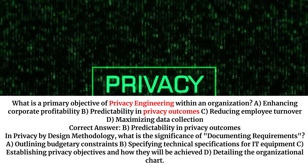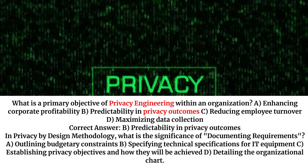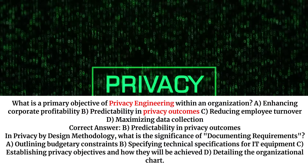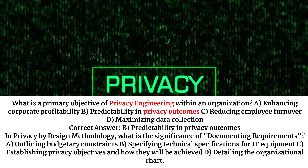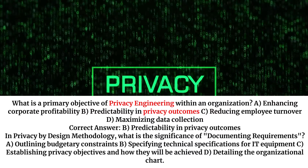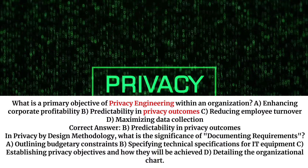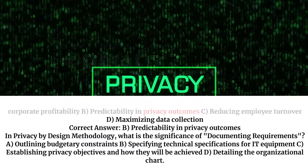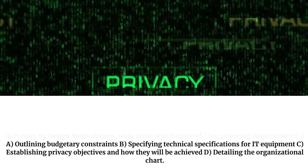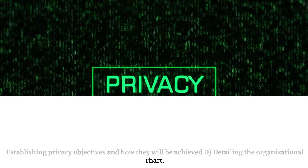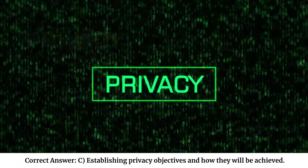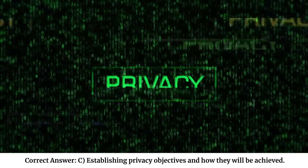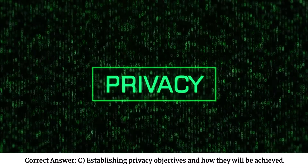In privacy by design methodology, what is the significance of documenting requirements? A. Outlining budgetary constraints. B. Specifying technical specifications for IT equipment. C. Establishing privacy objectives and how they will be achieved. D. Detailing the organizational chart. Correct answer: C. Establishing privacy objectives and how they will be achieved.